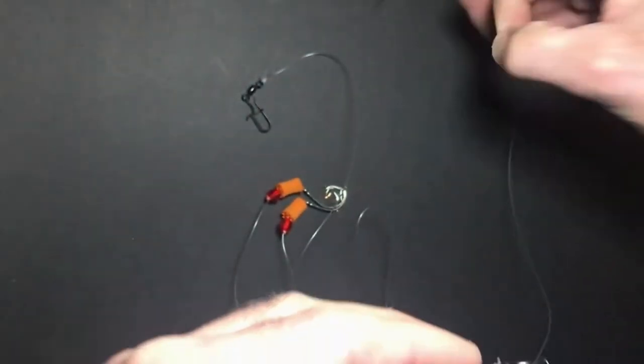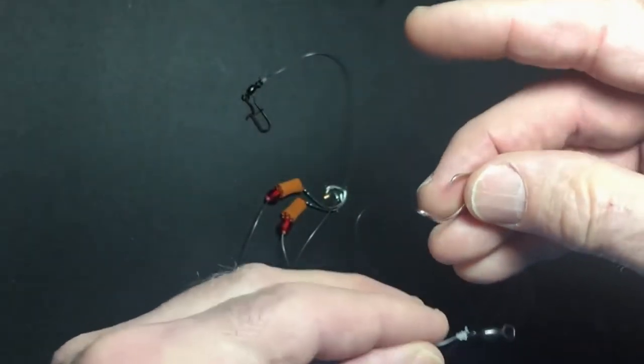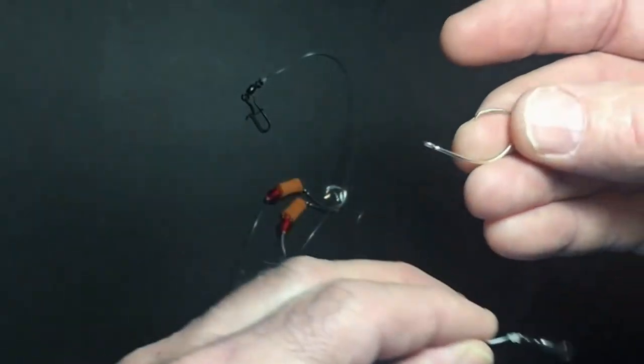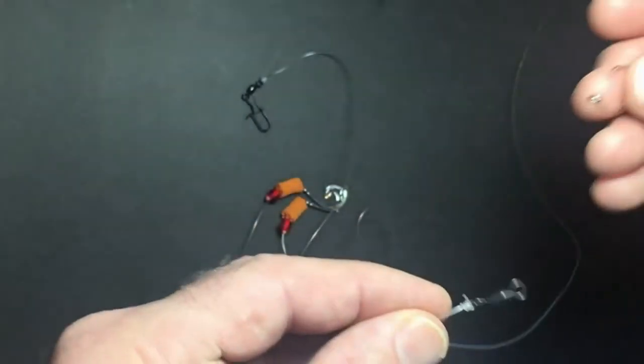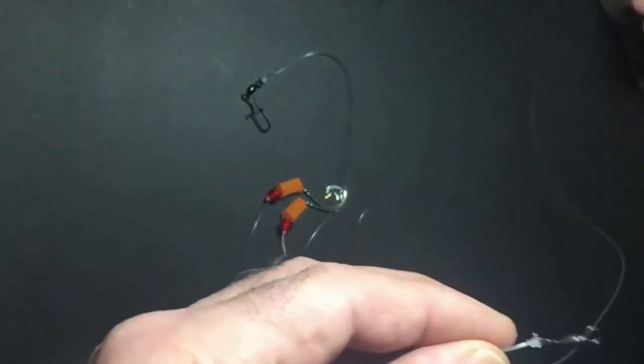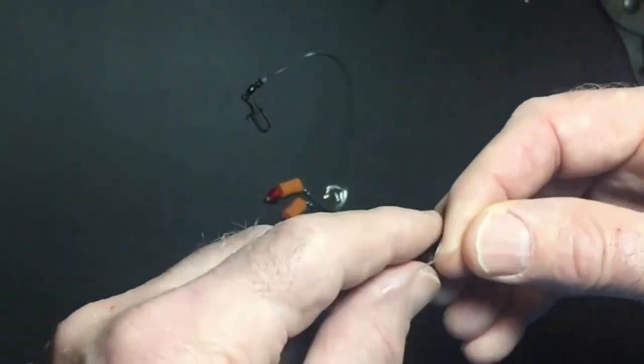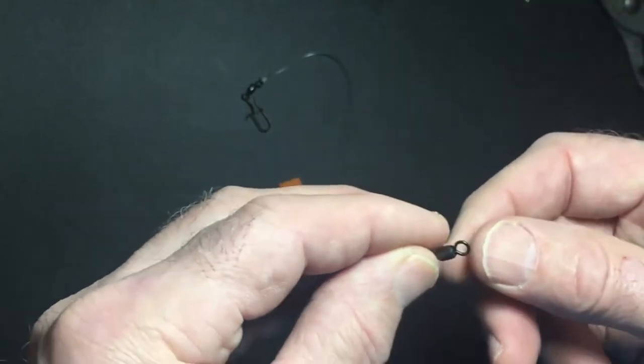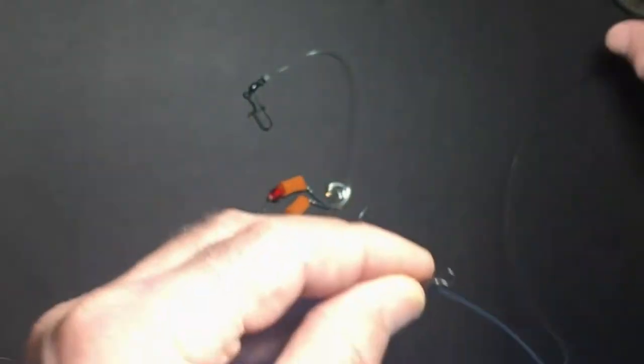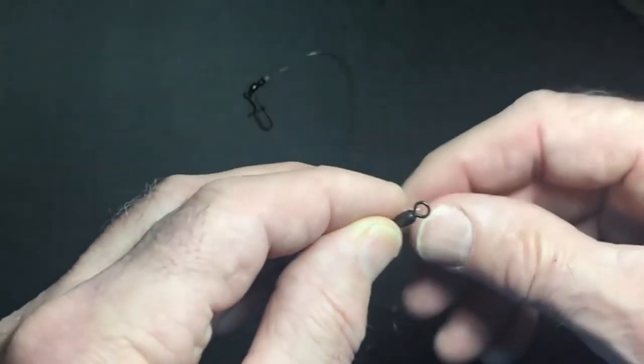It's also a knot that you're going to use, let's say for some reason you get a big blue and it straightens out one of your hooks and you can't bend it back and you cut it off and you want to tie a hook back out there on the surf. That's going to be your knot you're going to use.